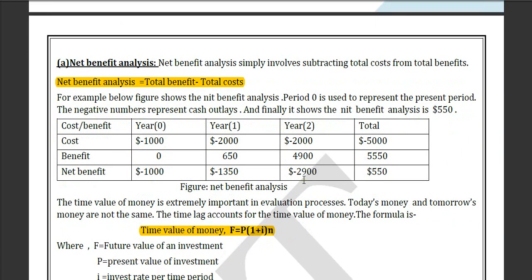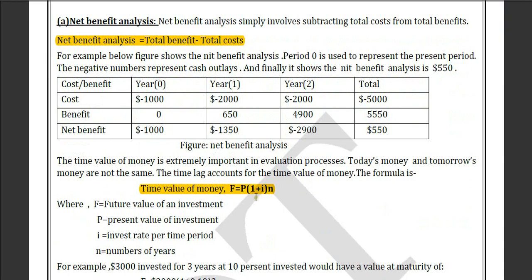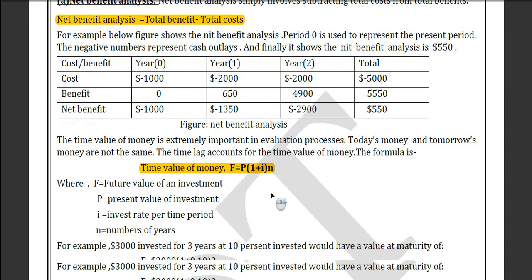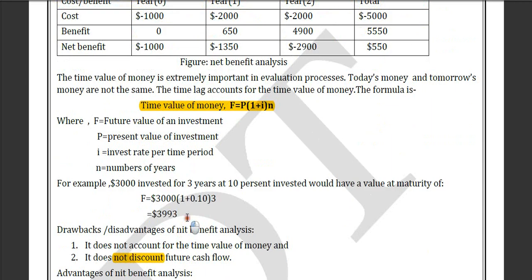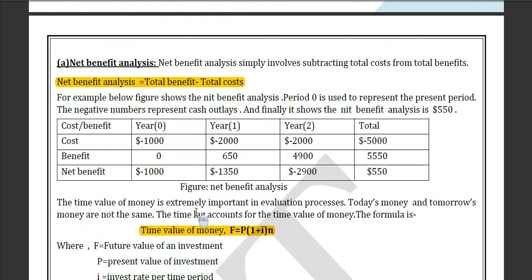The first one is net benefit analysis. The formula is F = P × (1 + I) × N, where F is the future value, P is the present value, I is the interest rate, and N is the number of years. Net benefit means total benefit minus total cost. For example, if you have $1 million in benefit and your cost is $999, subtract them to get the net benefit.